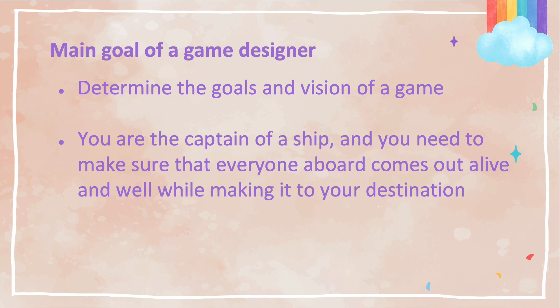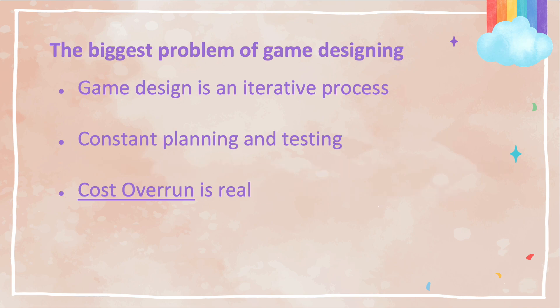The problem is, unlike partner dance where feedback is immediately given back to you, in game design you can only get feedback after you have a tangible object that your players can play with. Basically, you need to build your toy out first. This leads to several problems. Since you cannot test out your game ideas until you have a tangible product in hand, you need to allocate resources to building your game. If you are a solo developer, this means dedicating your time and even money to building out your first tangible prototype. However, as with most plans, the first one usually never works out — so you must iterate.